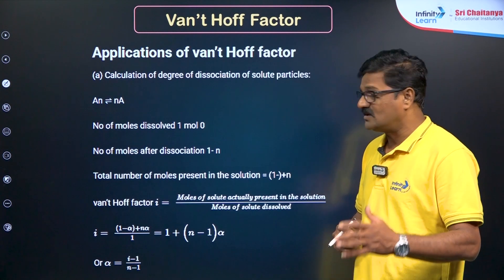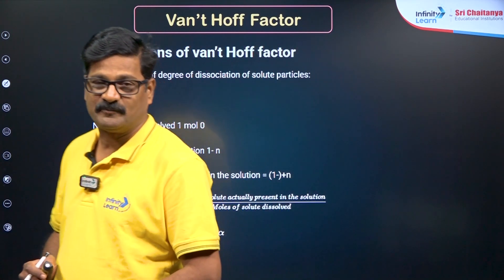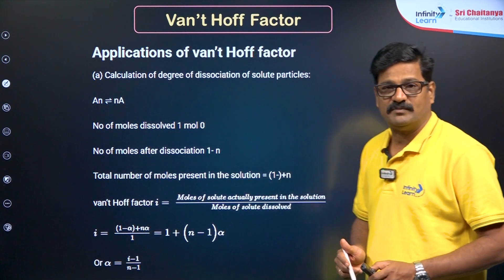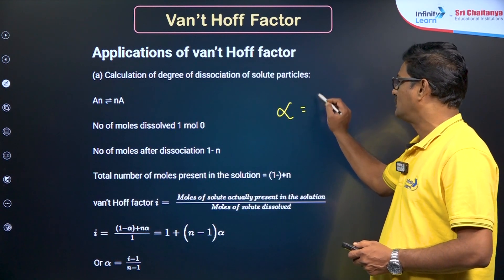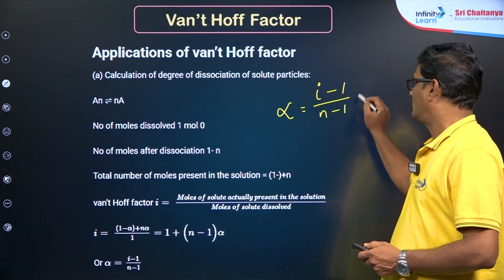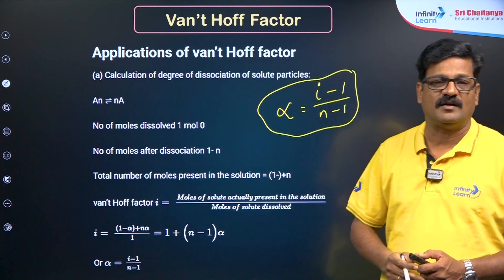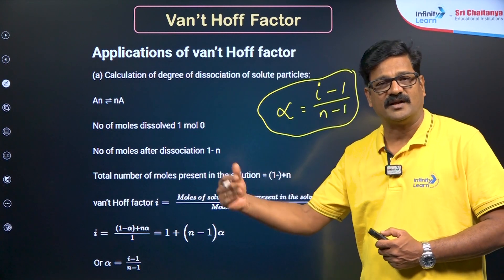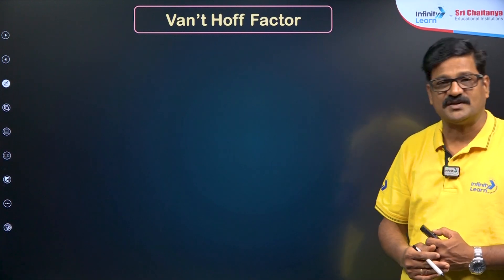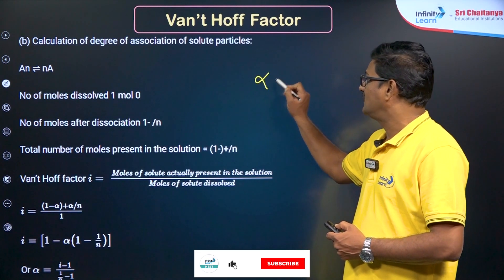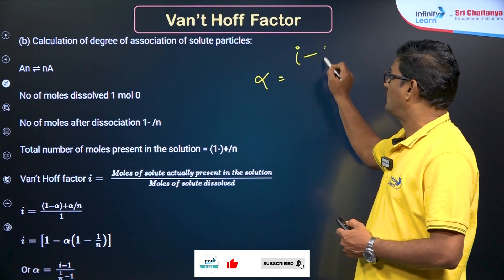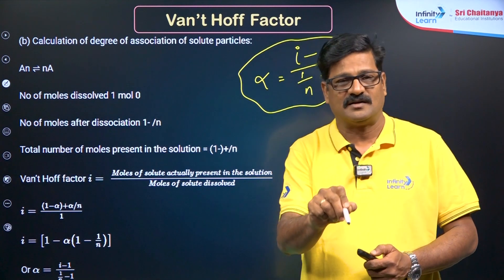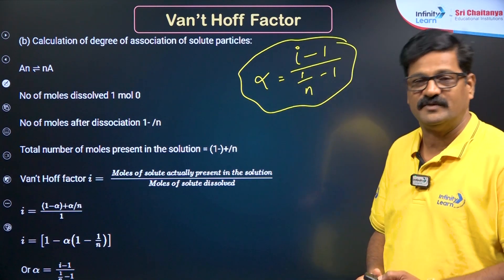The Van't Hoff factor is linked with the degree of dissociation or association. When an electrolyte dissociates, i can be calculated using: α = (i − 1) / (N − 1), where α is the degree of dissociation, i is the Van't Hoff factor, and N is the number of particles after dissociation. For association, α = (i − 1) / (1/N − 1). These two formulas look similar but are not — the N value makes the difference.